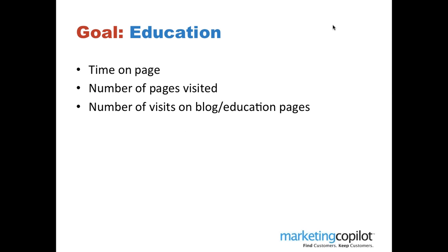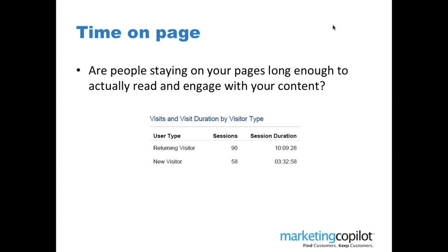For education as a goal, the types of things to mine from Google Analytics are: time on page — how long did people stay to read? Number of pages visited — how compelling was the content that people wanted to click around and read more? And number of visits to blog and education pages. This is where you'd look for data to figure out whether your education and thought leadership goal is working.